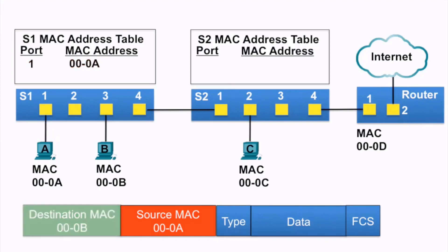Next, switch S1 examines the destination MAC address and notices that this MAC address is not in its table, so it floods it out all ports.